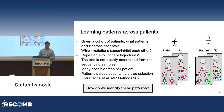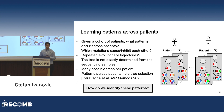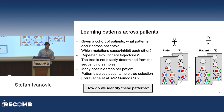Specifically, we can learn patterns across cohorts of patients. Given a cohort of patients, what patterns occur across patients? For instance, which mutations cause or inhibit each other? Are there repeated evolutionary trajectories? Something that really complicates this is the fact that the tree is not exactly determined from the sequencing sample. Instead, there are many possible trees per patient, as shown in the diagram. This complicates determining the patterns, but it also adds an advantage: once you understand patterns across patients, it can help you determine which tree is the correct tree for a given patient. The main question is: how do we identify these patterns?